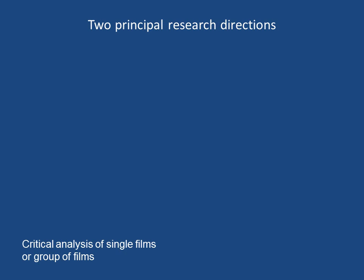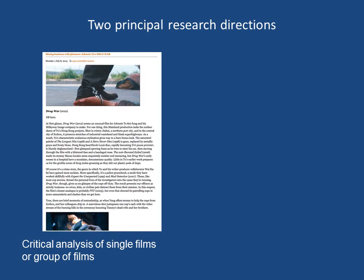There are two principal research directions we tend to follow in our online activities. One is a critical analysis of single films or a group of films — taking a look at a particular movie or group of movies and trying to come to some conclusions about their artistic qualities. For example, I saw Johnny To and K. Fung's film Cold War, liked it very much, and wrote a blog about it full of spoilers, because I think it's a very important accomplishment in recent film history.